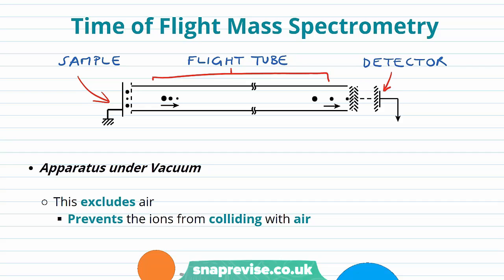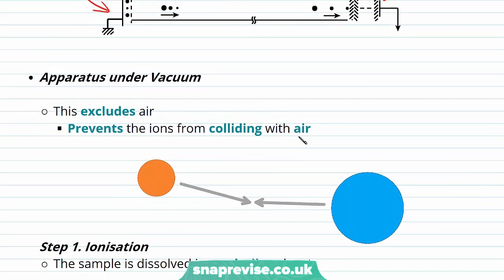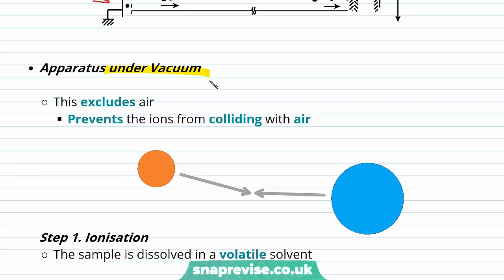So now I've had a generalized overlook at the apparatus involved, let's take a closer look at the steps involved in time of flight mass spectrometry. Well the first thing to understand is that the apparatus are kept under a vacuum. This excludes air and prevents our ions that we form from colliding with any air particles.